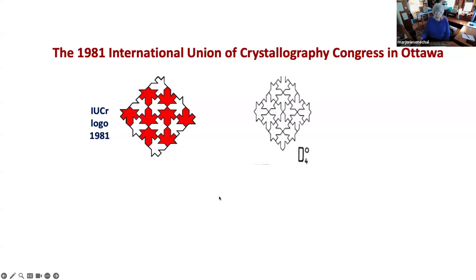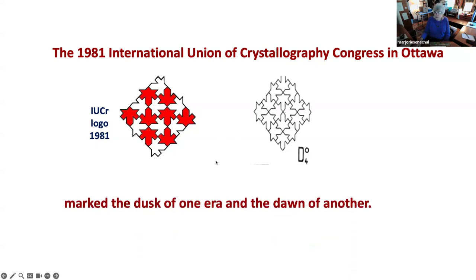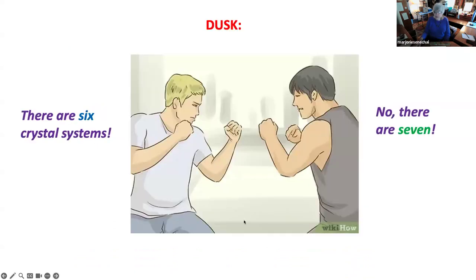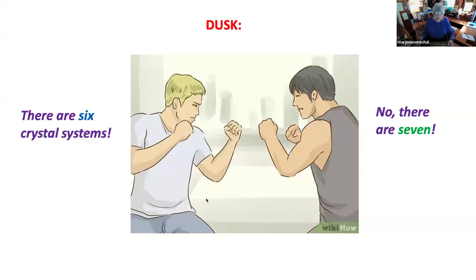Then we come to what I consider a sort of watershed: the 1981 International Union of Crystallography Congress in Ottawa, Canada. Its logo was one of Polya's drawings. I found that this conference marked the dusk of one era and the dawn of another. I actually saw two crystallographers — one German, one Russian — having a fight, not over politics, but over this question: are there six crystal systems or are there seven? They were yelling and screaming at each other, ready to start hitting each other, over what was only a matter of how you define a crystal system.